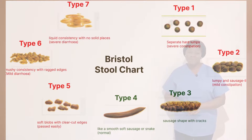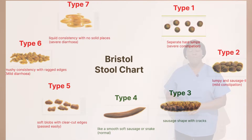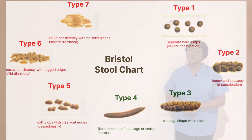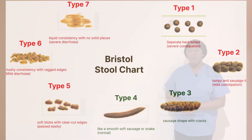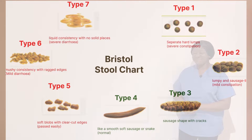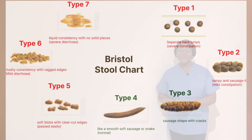The Bristol stool chart is a seven-point scale tool designed to assess normal or altered bowel activity. It is rated on a scale of one to seven.